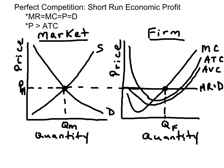This firm is earning an economic profit because the price exceeds ATC. The per-unit economic profit is the difference between the price at MR equals MC and the ATC curve. When we multiply by the quantity, we get the area of total economic profit, which is shaded in green.